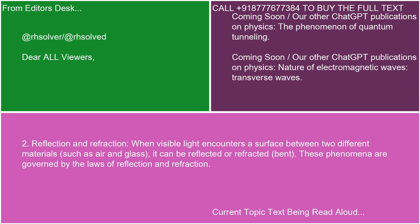2. Reflection and refraction. When visible light encounters a surface between two different materials, such as air and glass, it can be reflected or refracted (bent). These phenomena are governed by the laws of reflection and refraction.